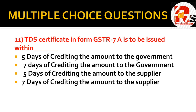Eleventh question: the TDS certificate in form GSTR 7A is to be issued within — options are 5 days or 7 days of crediting the amount to the supplier. In GST there are many forms, many days, and many rules to remember. The right answer is 5 days of crediting the amount to the government. So GSTR 7A must be issued within 5 days of crediting the amount to the government.